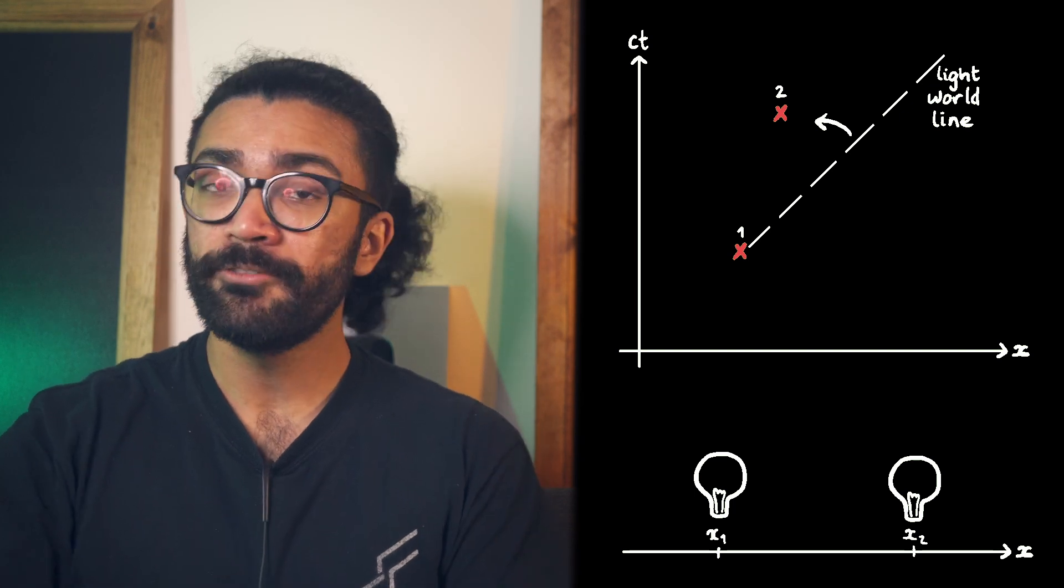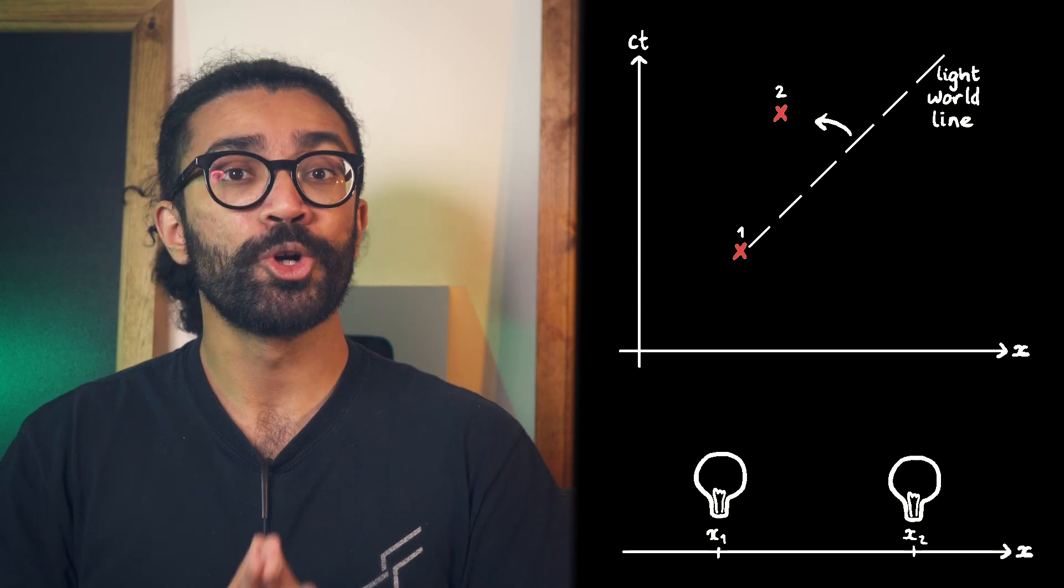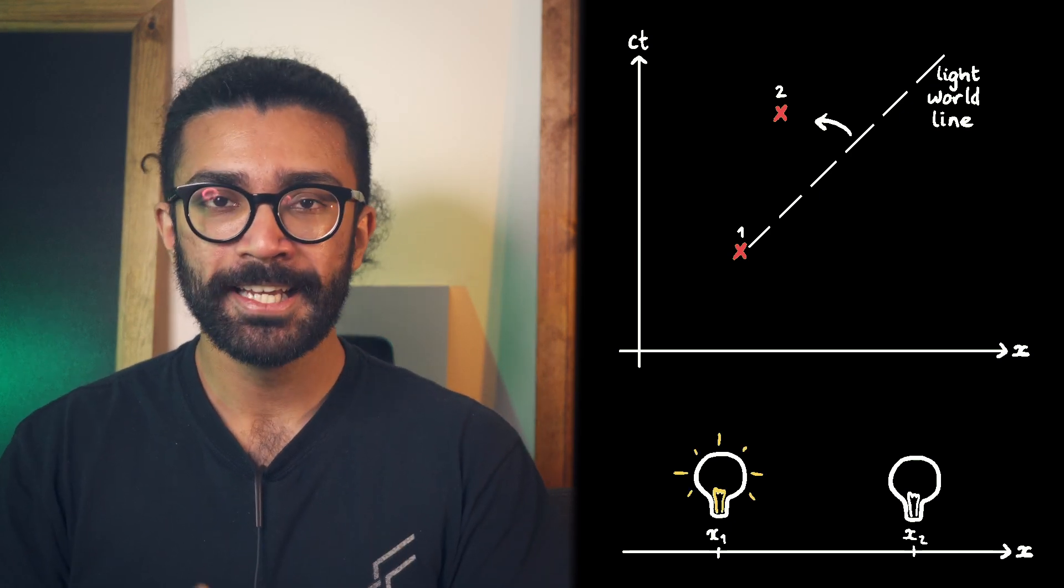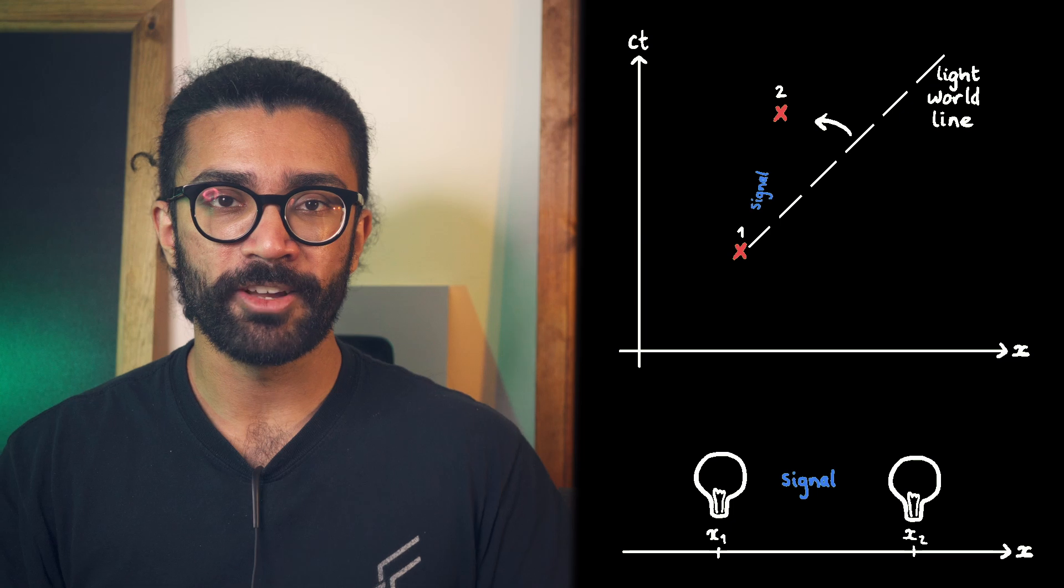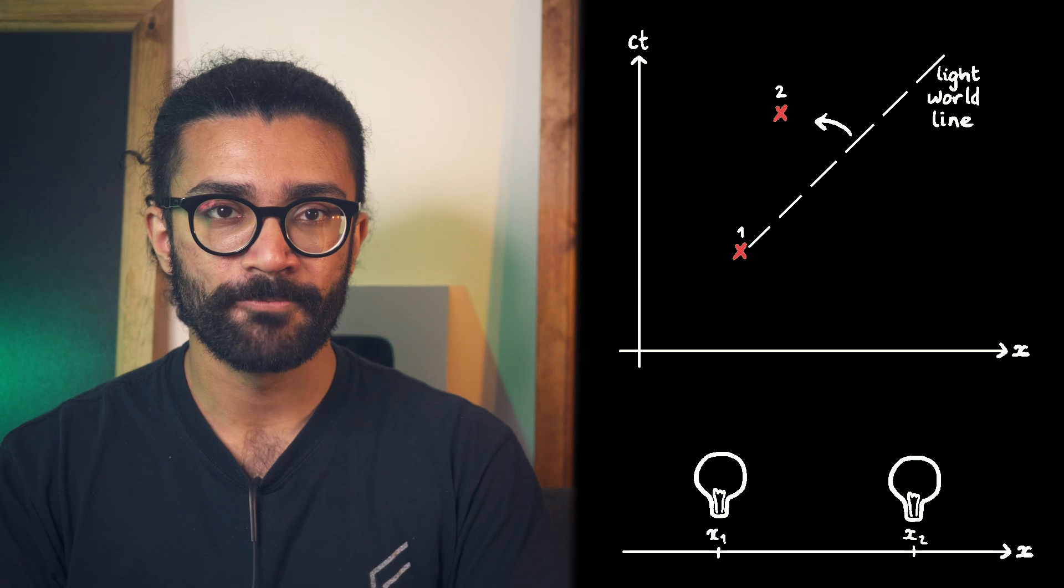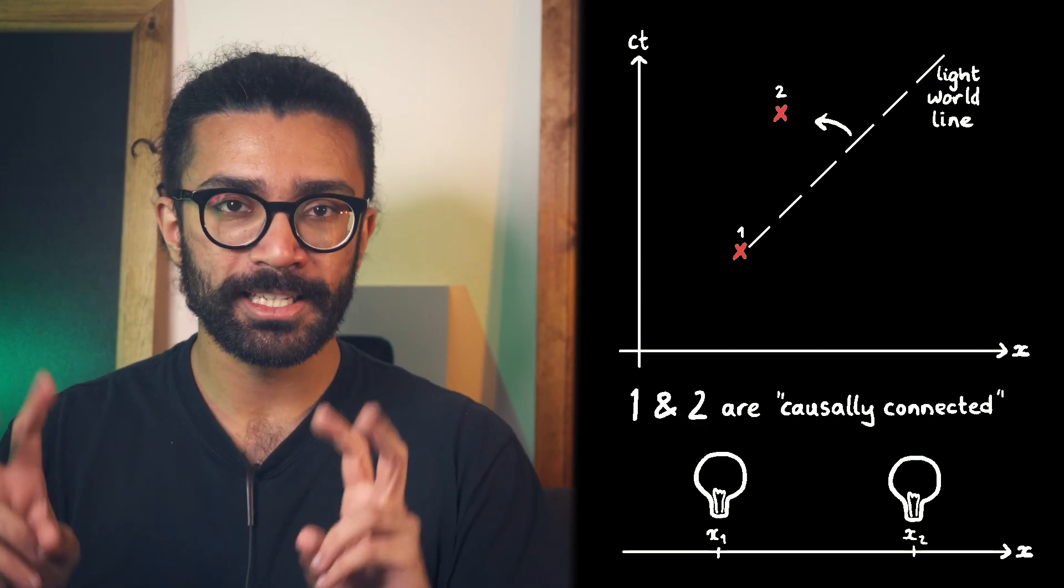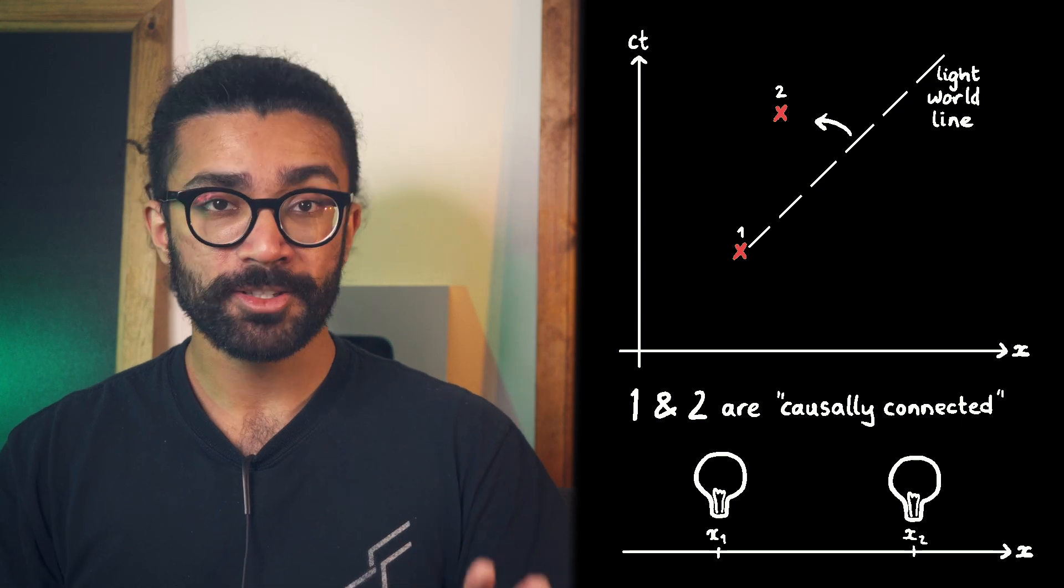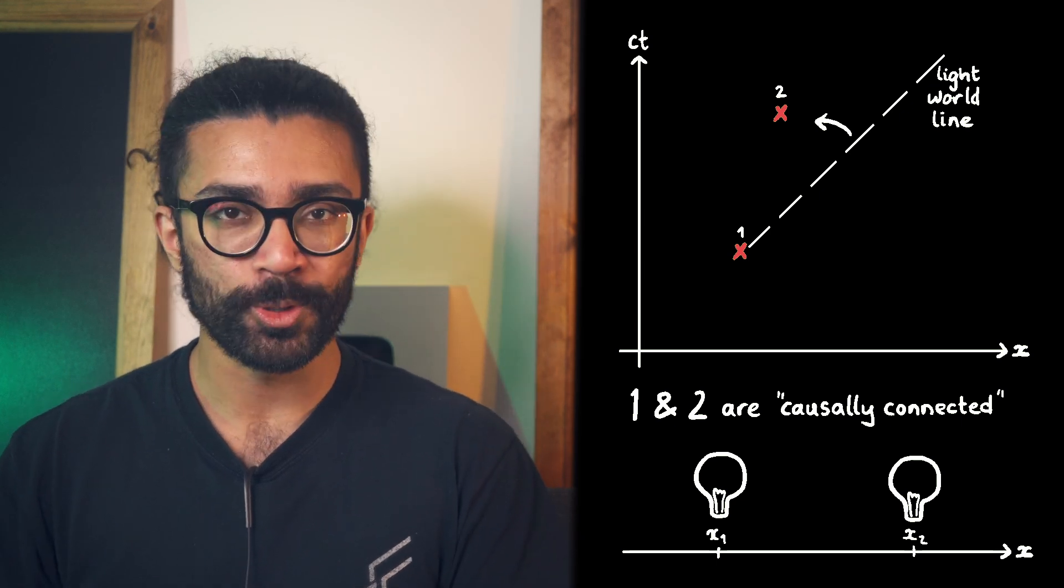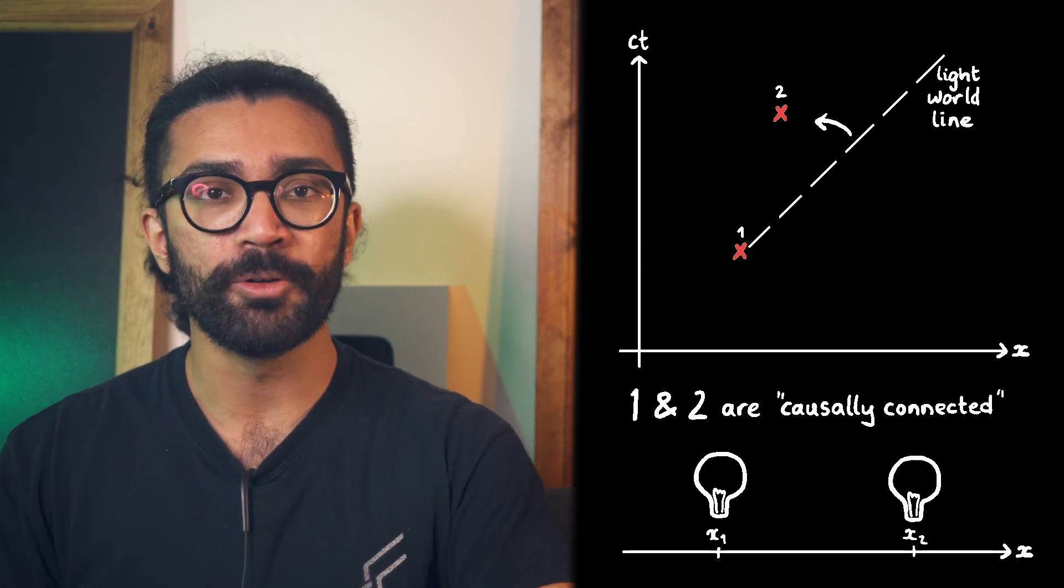this means that a signal even slower than light, maybe a really fast electron beam, could be sent from event one as soon as it happens to event two and arrive before event two happens or just as it happens. This is important because this means that the two events are causally connected. It is possible that event one caused event two because a signal from event one could reach event two before it actually happened.